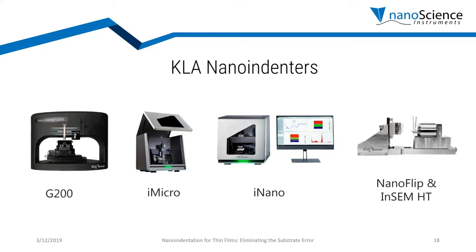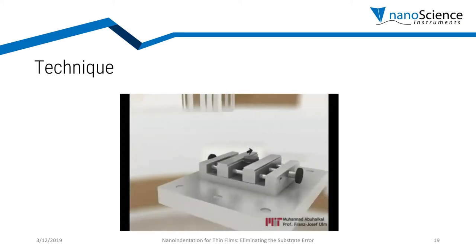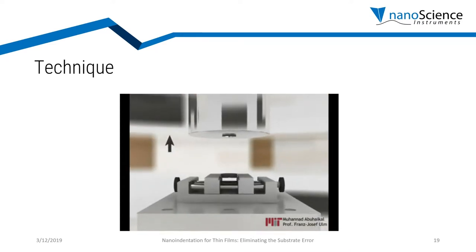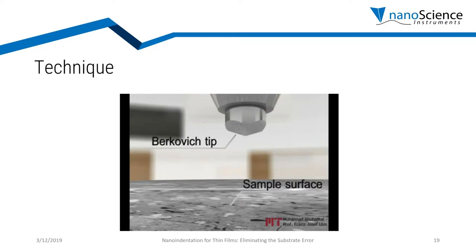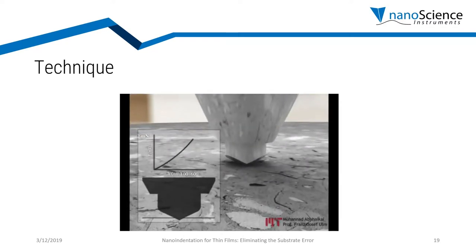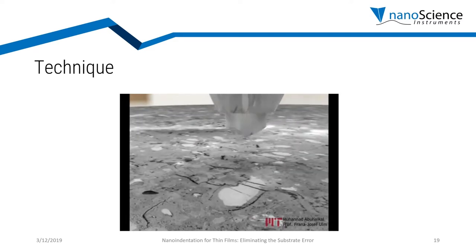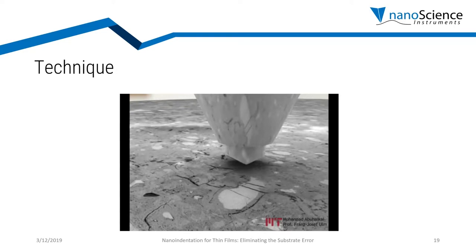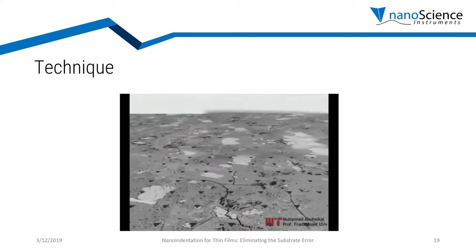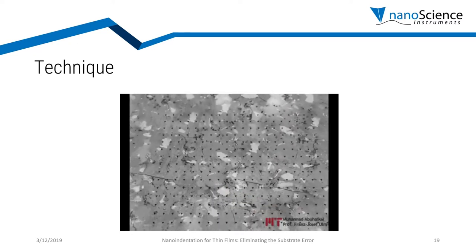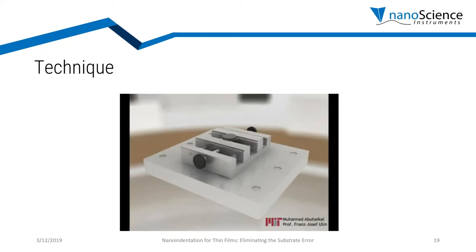If you are not familiar with nano indentation, the basic process is this: you have a sample and you place an indent using a tip — here we use a Berkovich tip — and you move the tip onto the surface and penetrate into it. While doing so, you measure the load you are applying and the displacement it produces into the surface. The process is very fast, done in seconds, allowing you to produce hundreds of indents for excellent statistical data.